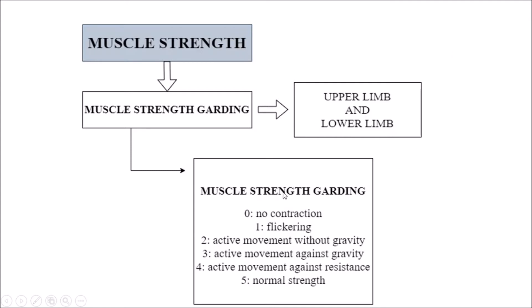There is a muscle strength grading scale. If there is no contraction, it is graded 0. A flickering movement present is graded 1. Active movement without gravity is graded 2. Active movement against gravity is graded 3. Active movement against resistance is graded 4. Normal strength is graded 5. For example, if you just touch the patient and the patient shows sudden resistance, it may suggest spasticity.